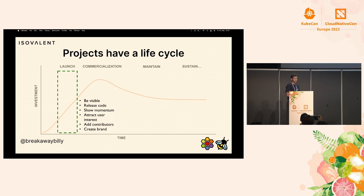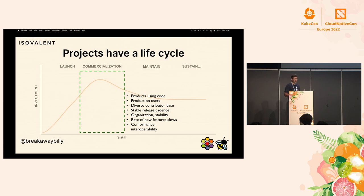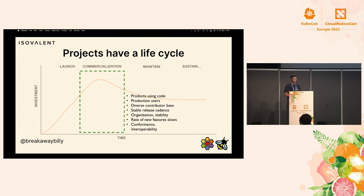In the initial launch phase, you need to get the word out, be visible, release the code, show momentum, attract user interest, add contributors, and create the brand. This is what gets the project initially off the ground, and it's a lot of work. In the next stage, commercialization, you're still seeing a very high level of investment but there's a lot more momentum. You have products using the code, production users, a diverse and stable contributor base, a steady release cadence, and the beginning of a push towards conformance and interoperability.